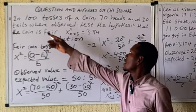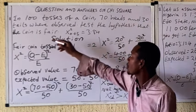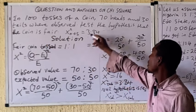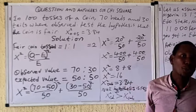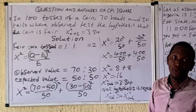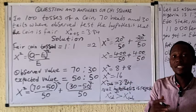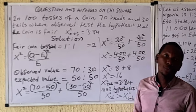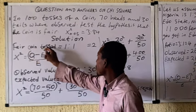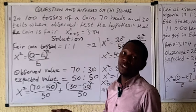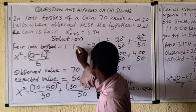So let's take a look at this: in 100 tosses of a coin, 70 heads and 30 tails were observed. Test the hypothesis that the coin is fair. You know that if you toss a coin, you either get a head or a tail, so the probability of getting a head is 1/2 and the probability of getting a tail is 1/2. For a fair coin, the ratio is 1:1.